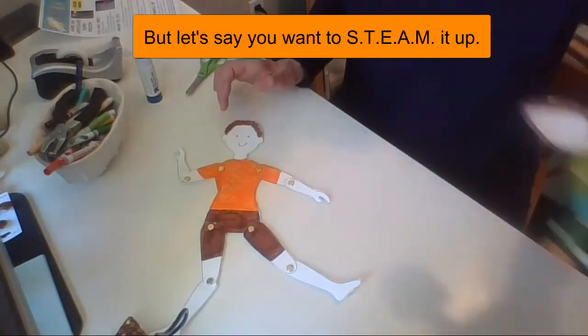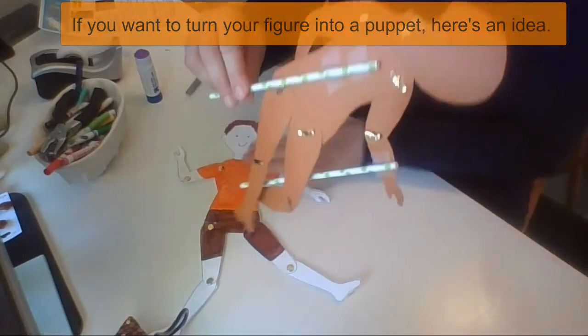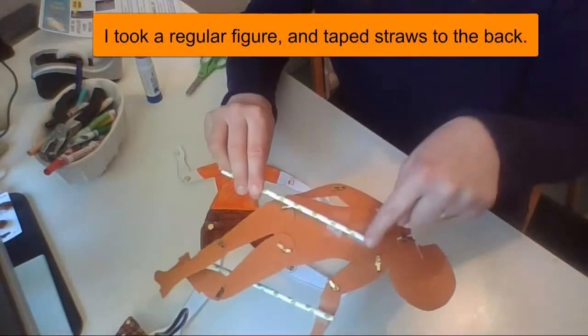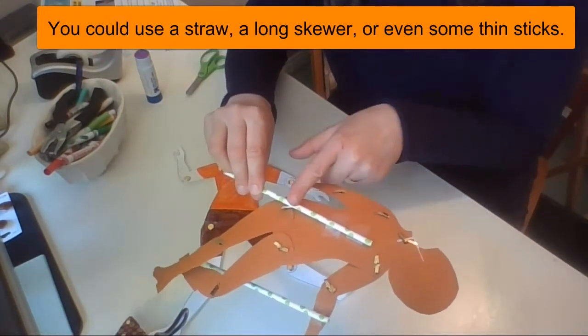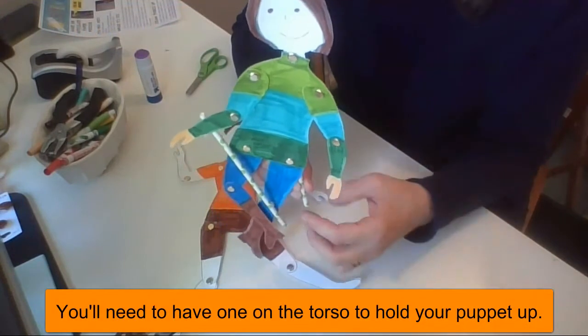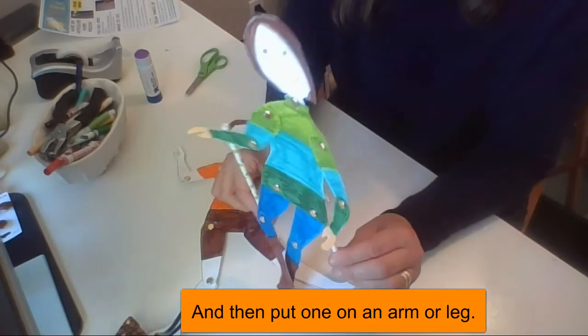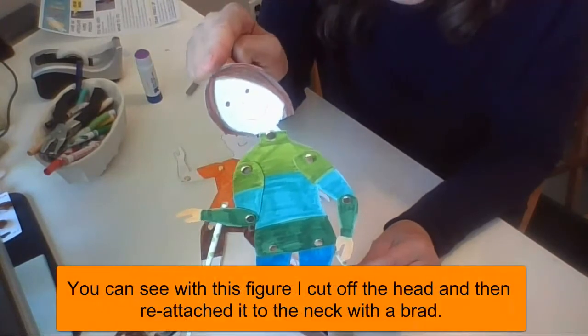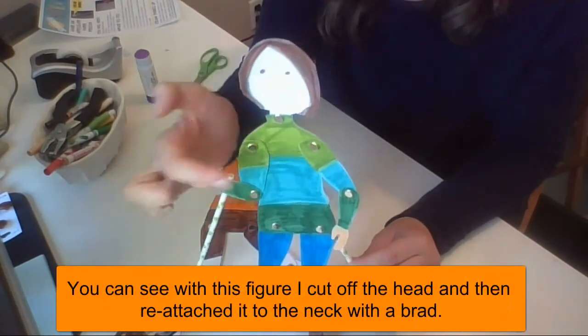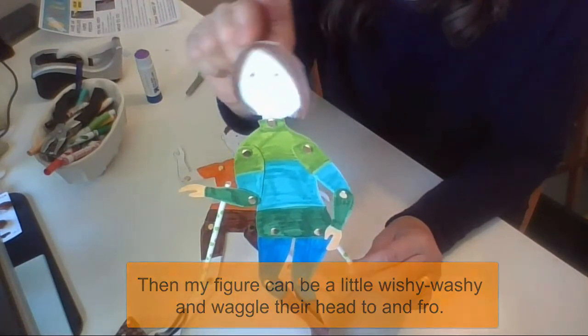If you want to turn your figure into a puppet, here's an idea. I took a regular figure just the same as this and I took a straw and taped it to the back. You could use a straw, you could use a skewer, you could use a thin stick from outside. You'll need to have one on the torso to hold your puppet up and then maybe put one on an arm or a leg. You could put more on there, it depends on how good you are at holding different pieces of straw. You'll see with this puppet or with this figure I cut off the head and reattached it using a brad at the neck so that my figure can be a little wishy-washy and waggle their head to and fro.